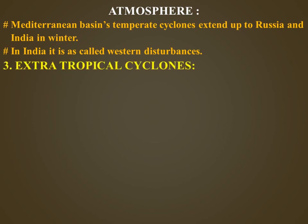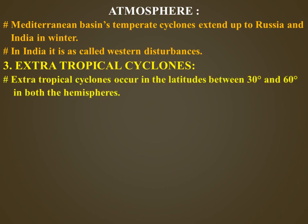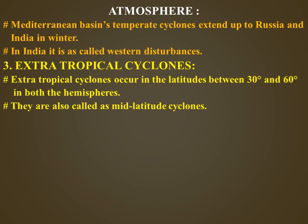Next we are going to learn about extra tropical cyclones. Extra tropical cyclones occur in the latitudes between 30 degrees and 60 degrees in both hemispheres. They are also called mid-latitude cyclones. They collect energy from temperature differences formed in higher latitudes. Extra tropical cyclones produce mild showers to heavy gales, thunderstorms, and blizzards.